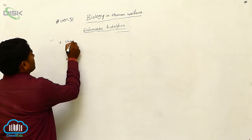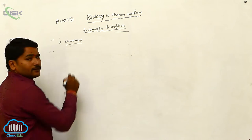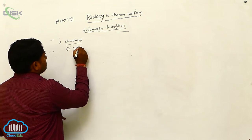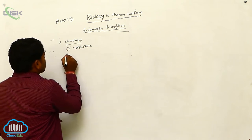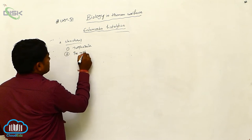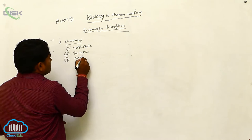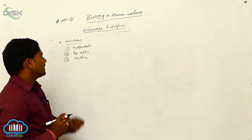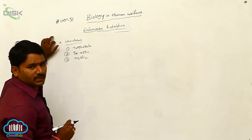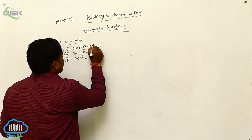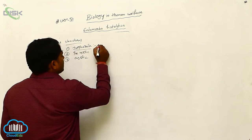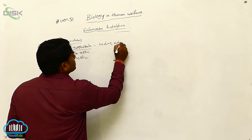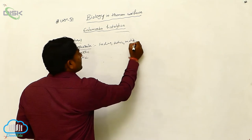In the life cycle of Entamoeba histolytica there are different types of structures. First is the trophozoite stage, second is the precystic stage, and third is the cystic stage. The trophozoite is the feeding stage — it is active, motile, and pathogenic.